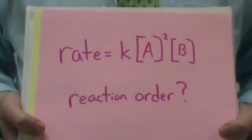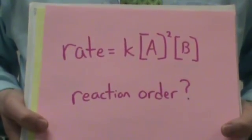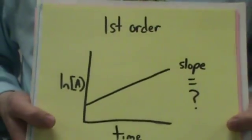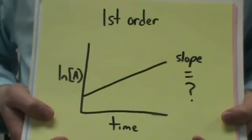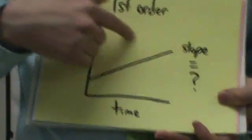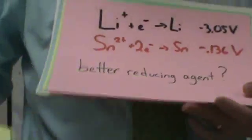What is the reaction order? Third. What is the slope of that line? Should be negative K. It should be going down.